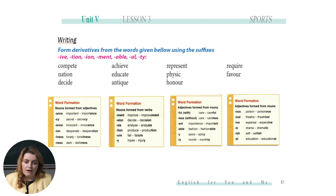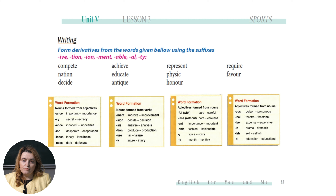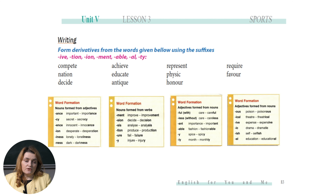Importance → important. Fashion → fashionable. Spice → spicy. Month → monthly. Poison → poisonous. Theater → theatrical. Expense → expensive. Drama → dramatic. Self → selfish. Education → educational. Now it's your time to practice. Pause the video, take your notebook, and form derivatives from the words given below using the suffixes in pink.